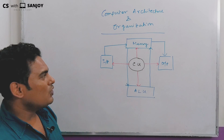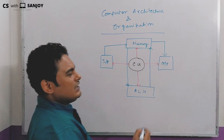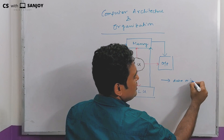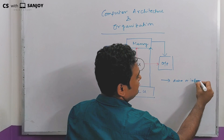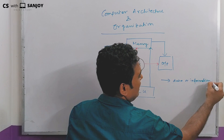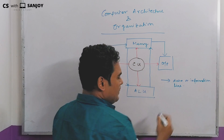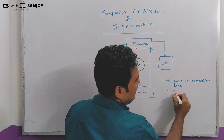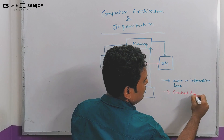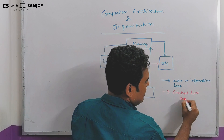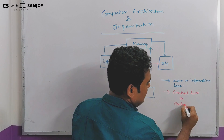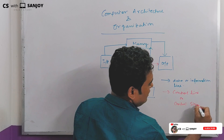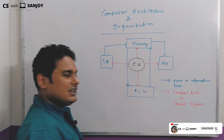The blue line is the data or information line, and the red line is called the control line — or you can say control signal, abbreviated CS.